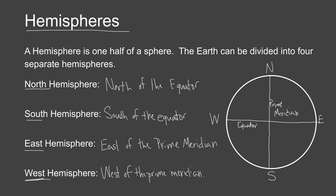On your notes, make sure you're drawing a little circle with north, south, east, and west labeled. You're going to want to make sure you have the equator as well as the prime meridian marked.